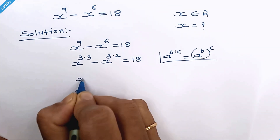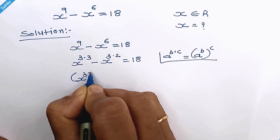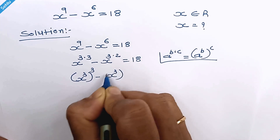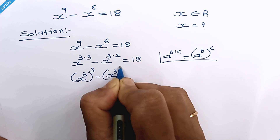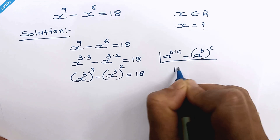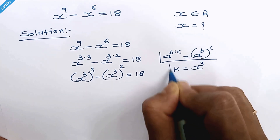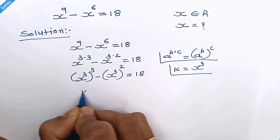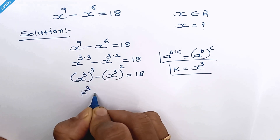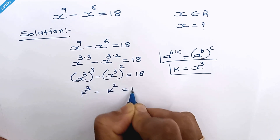So here we can write x cube whole cube minus x cube whole square is equal to 18. Now let's take k in place of x cube.